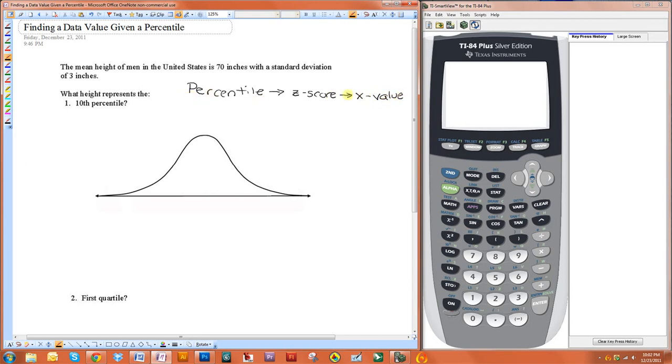Now the percentiles will always represent area under the normal curve. So we're going to take the area and then convert it to a z-score and then convert it to an x-value. Let's look at this graph here. We're assuming that the heights are normally distributed.